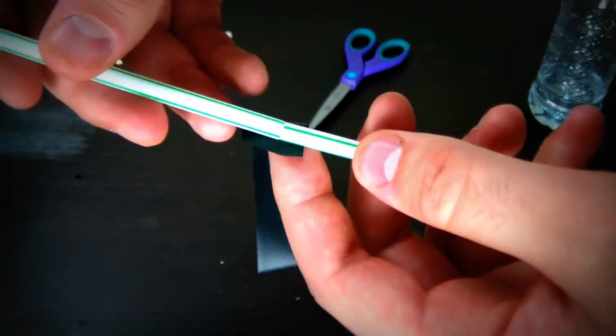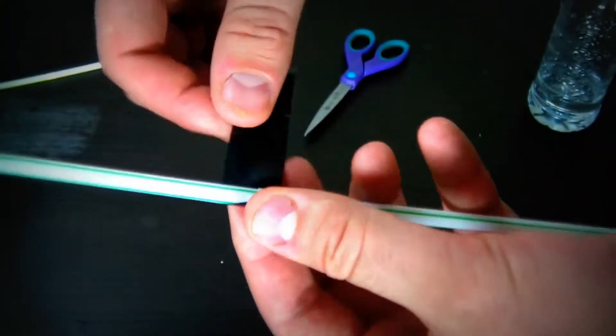To make one long straw, we're gonna take two straws and tape them up together.